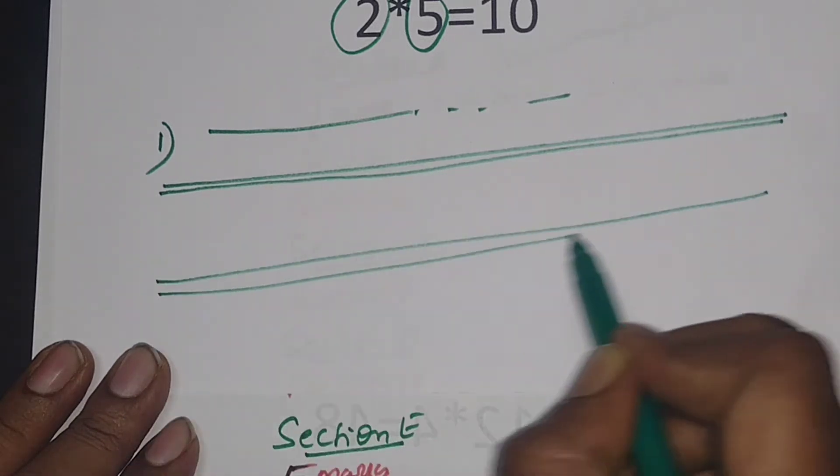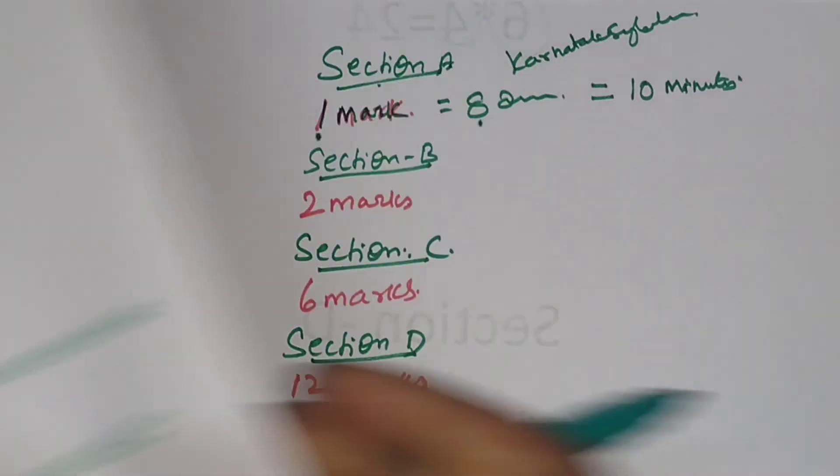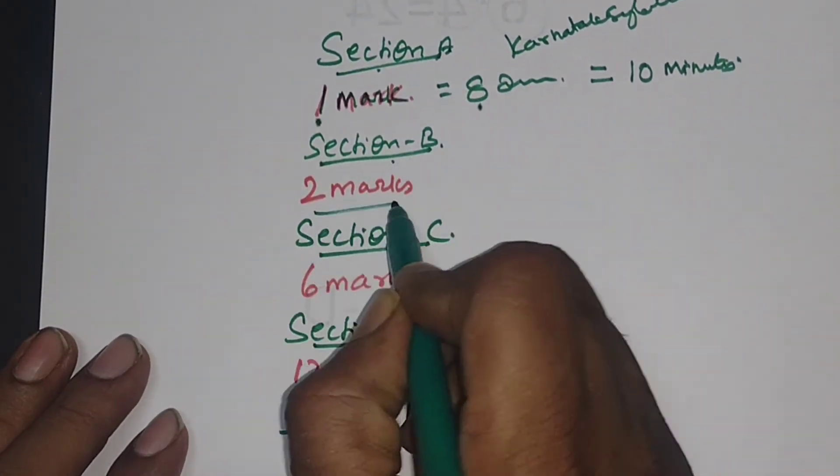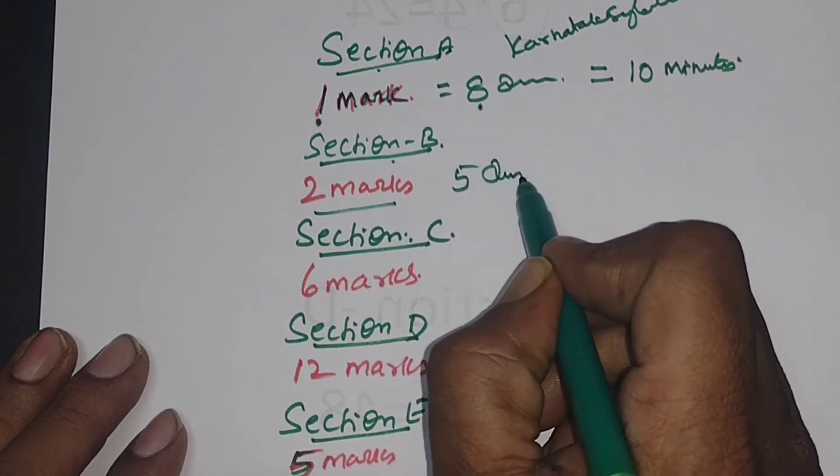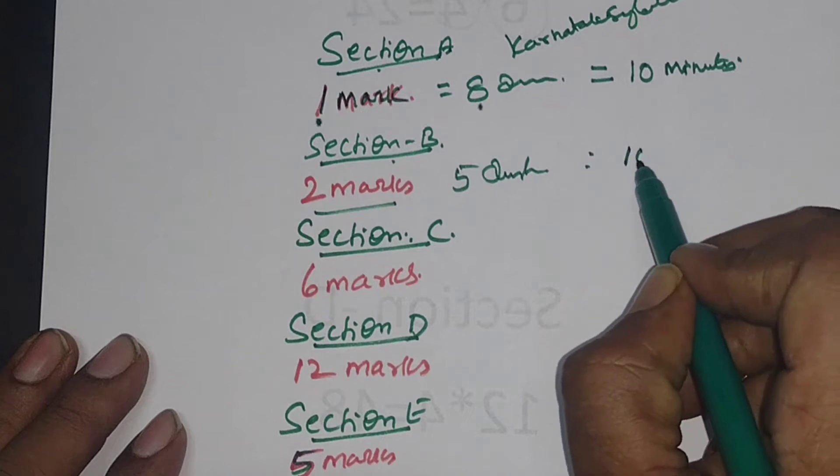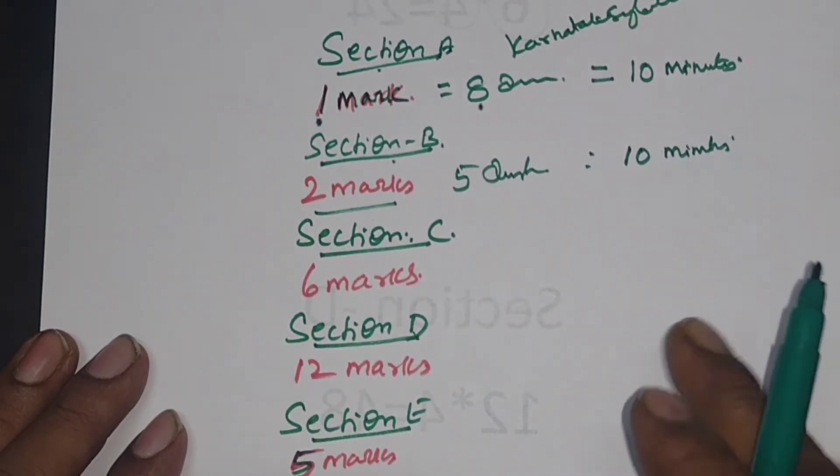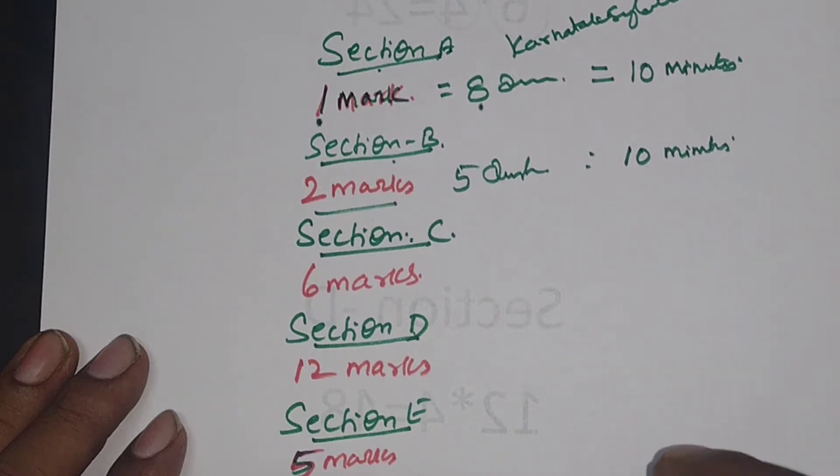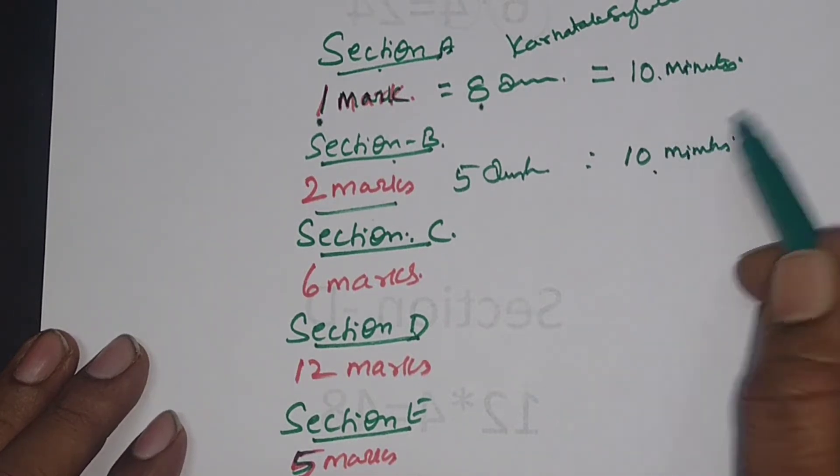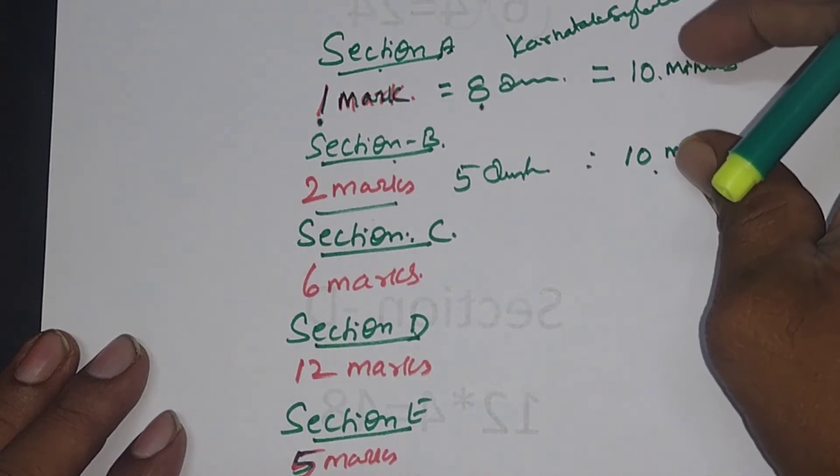Coming to section B, two marks, you need to attend five questions. So five twos are ten marks. Try to take within 10 minutes, that is two minutes per question. Five questions, 10 minutes. 10 plus 10 is 20 minutes. If you minimize the time, it will be good. The reason why I'll tell you later.